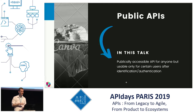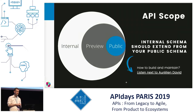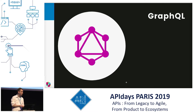Sorry for the watermarks — I shared the slides and it exported with them. I'm using Canva, obviously. Let's talk about the API scope. Normally you have different API scope levels: you have an internal API, then maybe a preview API for certain users or partners, and then the real public API available to everyone or a certain group of users.